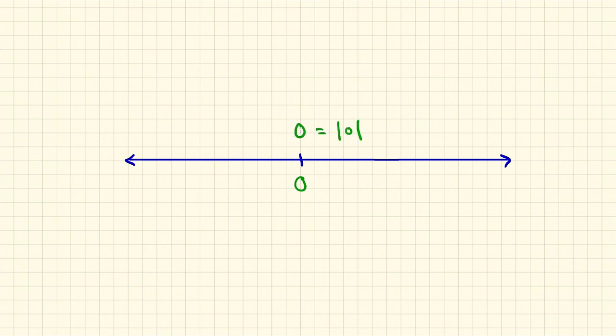If x happens to be zero, then the distance, of course, is zero, which is, by definition, the absolute value of zero.